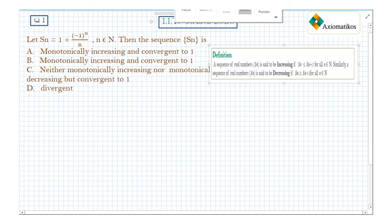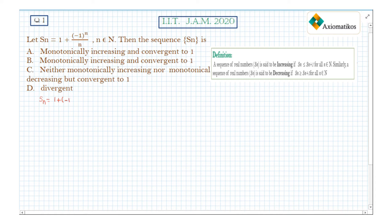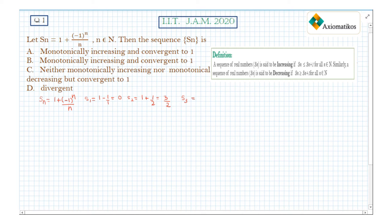So let us write Sn. Sn is 1 plus (-1)^n upon n. So S1 will be 1 minus 1 upon 1, that is 0. S2 will be 1 plus 1/2, that is 3/2. S3 will be 1 minus 1/3, that is 2/3. So S1 ≤ S2 and S2 ≥ S3.